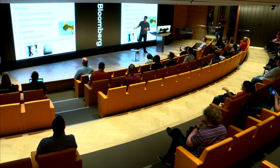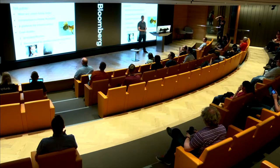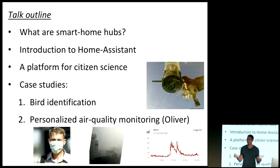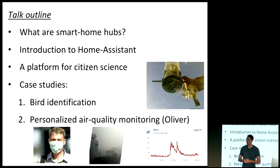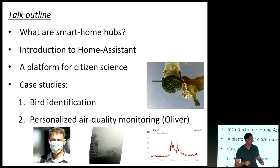Just to give you a brief overview of what I'm going to talk about: I'm first going to introduce the topic of the smart home and smart hubs, and answer the question — what are they, and why should I care? I'll then give a brief introduction to Home Assistant and tell you why I think it's a great platform for doing citizen science. Then we're going to have two case studies, and I'm going to present the first one — that's on a bird classification project I've been working on.